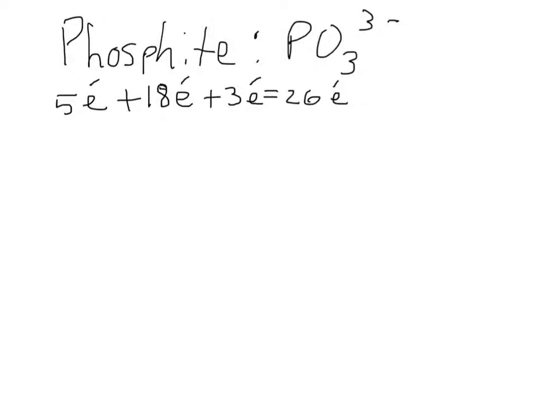So in my problem, we have phosphite, PO3 3- charge. We need to obtain the Lewis dot structure for this ion.